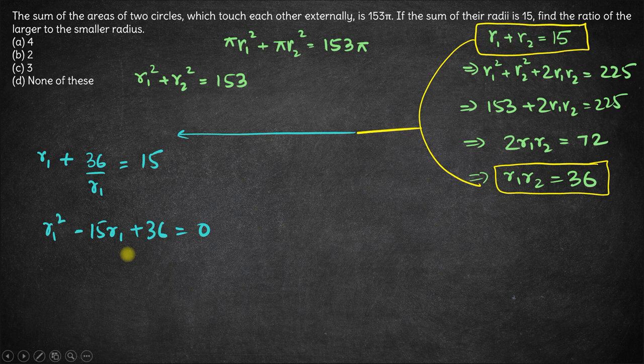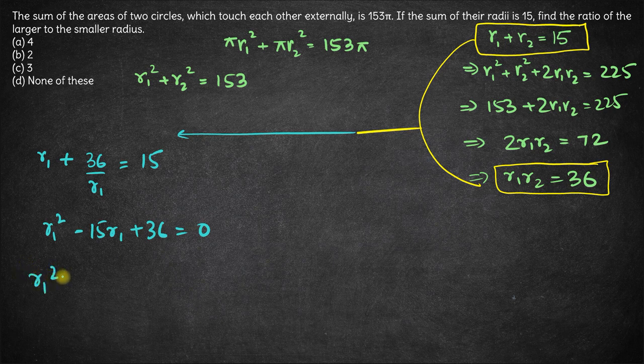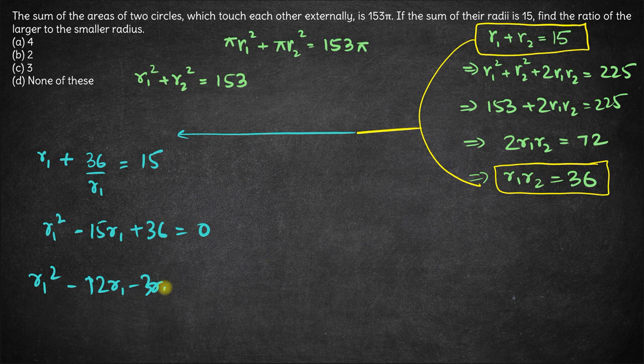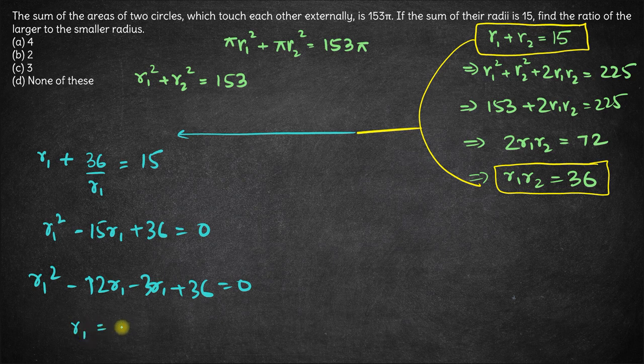Now effectively, we have to do the same thing. Think of two numbers whose sum is minus 15 and the product is 36. So this will be r1² minus 12r1 minus 3r1 plus 36 is 0, or you can use the formula method. From here, r1 comes out to be either 12 or 3.